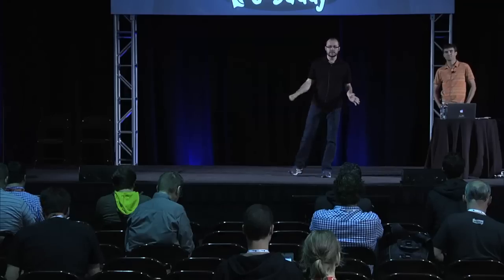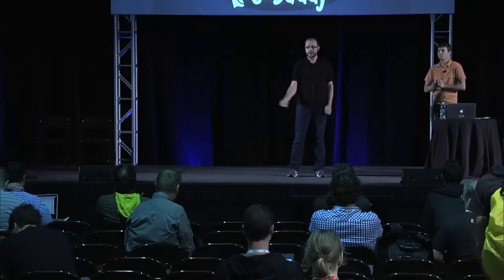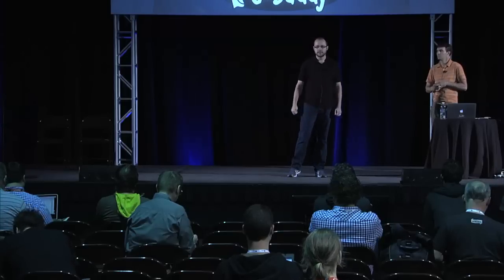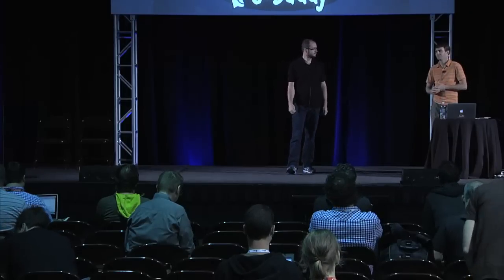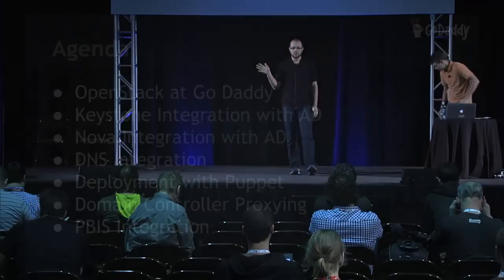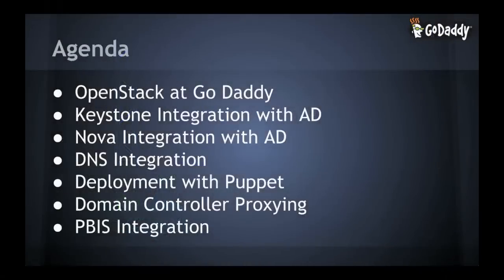Hi everybody. This is a talk on our experience integrating Active Directory with OpenStack. This is a quick overview of what we're going to talk about today. First, to give you some context, I'll tell you what we're doing with OpenStack at GoDaddy. Then I'll jump right into Keystone integration with Active Directory, the things we did to integrate Nova with it, and our DNS integration. Then Mike will take over to talk about deployment with Puppet, domain controller proxying, and PBIS integration.